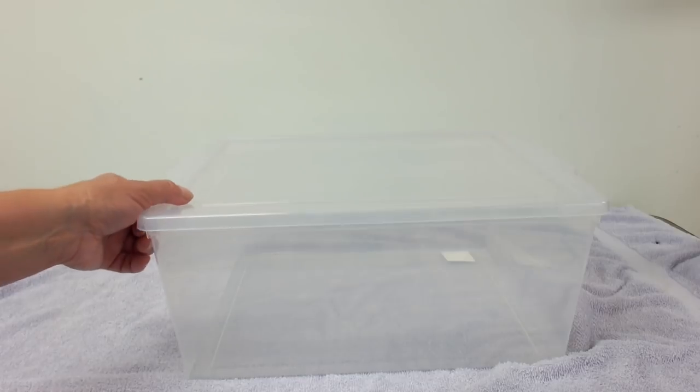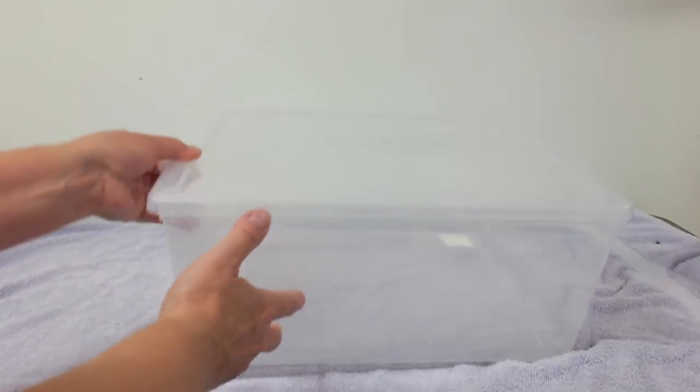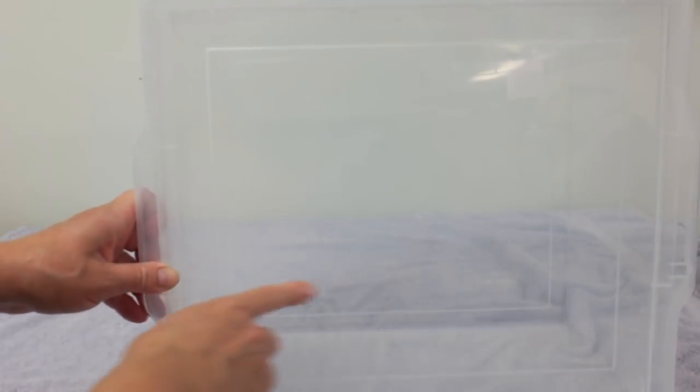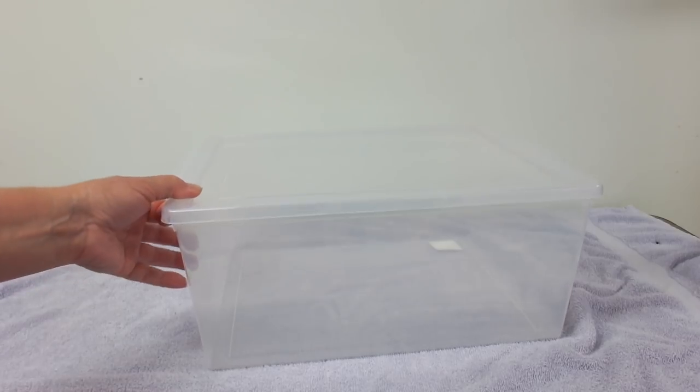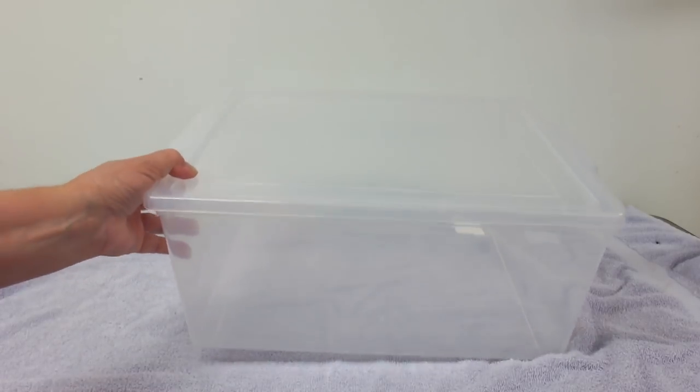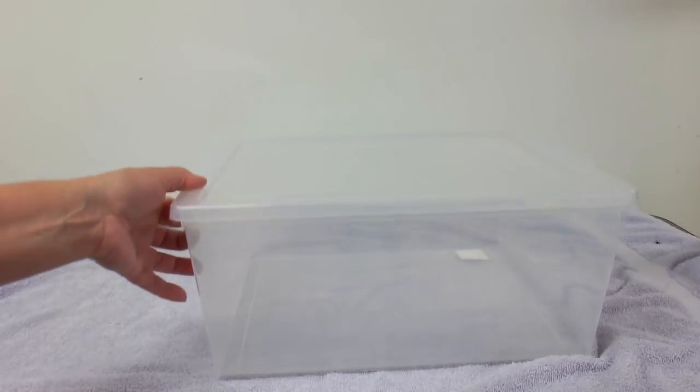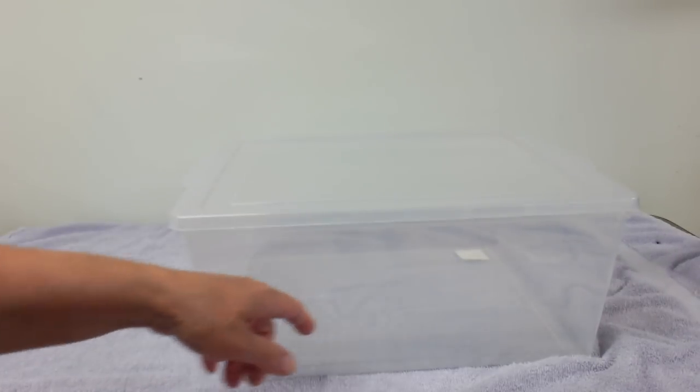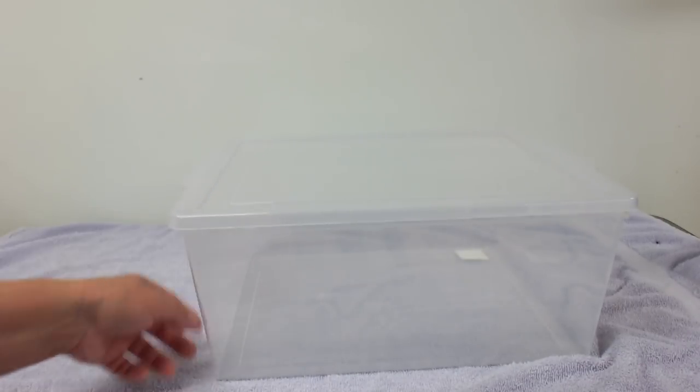Okay the first thing you need is a bin, a plastic container with a lid. You can get any size you want depending on what size bird you have. You can get bigger, you can get smaller, but I chose this one. I got it at the dollar store. I think it was two dollars. This is about thirteen and a half inches long and eleven and a half inches deep and six and a half inches high. So I'm gonna make my bird bath out of this container.